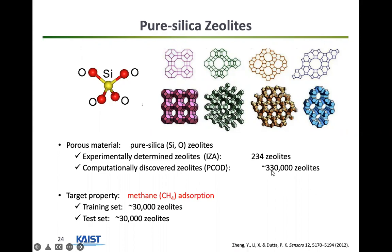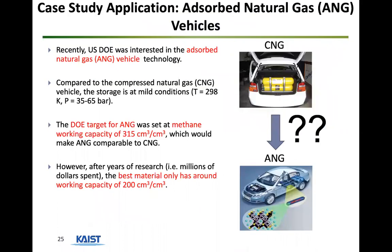There's a computationally discovered zeolite database that was available to us, and we used it as a training set for our neural network. We wanted not just to create zeolites but to create zeolites with certain user-desired properties. We focused on methane, which has application value for energy storage — specifically for CNG vehicles running on natural gas, which are stored at very high pressure around 700 bar. We wanted to store methane at room temperature at mild pressure, so we wanted to put porous materials inside the tank to adsorb high amounts of methane.